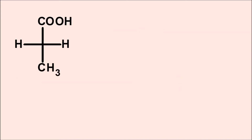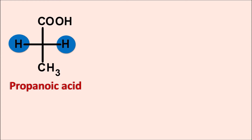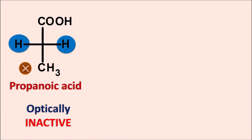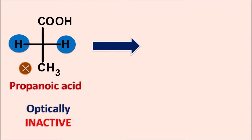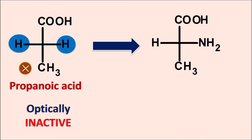Let us take one structure like this — this is a simple propanoic acid, and at the second carbon we can observe the two hydrogens. Since it is having two similar groups, this carbon is not chiral and it is optically inactive. Suppose one of these hydrogens is going to be replaced with the amine group, then the structure becomes like this. Now since it is having the amine group at the alpha position, this is the alpha amino acid, that is alanine.